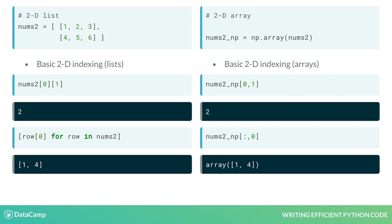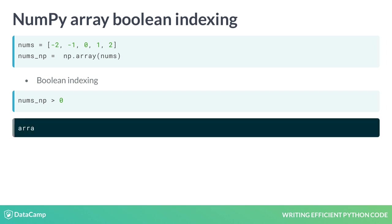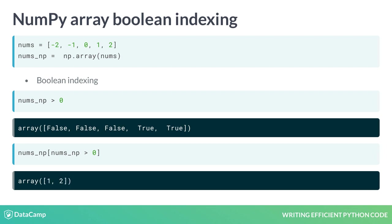NumPy arrays also have a special technique called Boolean indexing. Suppose we wanted to gather only positive numbers from the sequence listed here. With an array, we can create a Boolean mask using a simple inequality. Indexing the array is as simple as enclosing this inequality in square brackets.